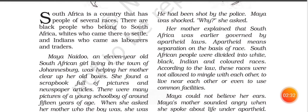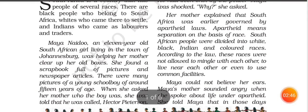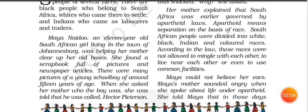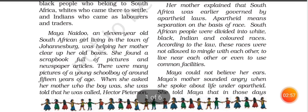In South Africa, the first government followed the apartheid laws. Apartheid means separation on the basis of race — separating white, black, Indian, and colored races.